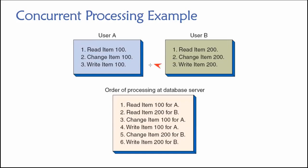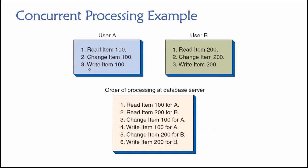The database handles those requests and makes the changes permanent — committing them. Whatever the new value for item 100 is becomes a permanent part of the database. At the same time, the database receives a similar request from user B to do the same for item 200. The database server can really only do one thing at a time, so although it receives requests simultaneously, it processes them serially — one after the other.